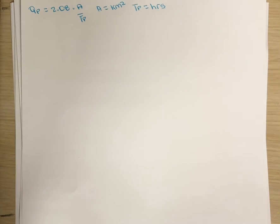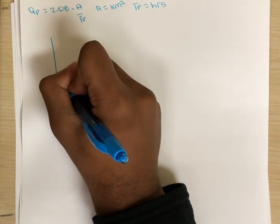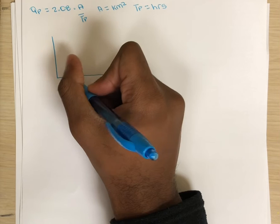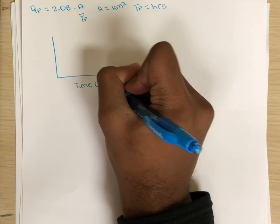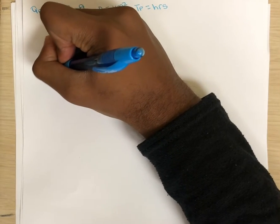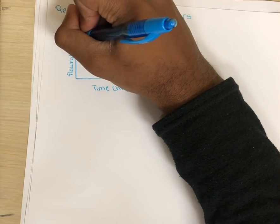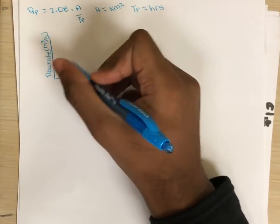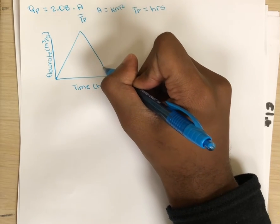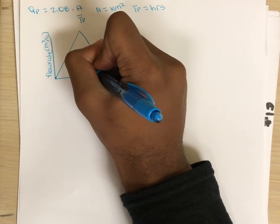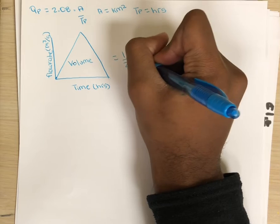Now through our understanding of the unit hydrograph, we know that the volume of the runoff is the relation between the time, duration, and the flow rate. And it's equal to the area of the entire triangle unit hydrograph. And we know that the area of triangles is equal to one-half base times height.